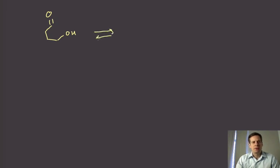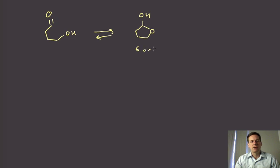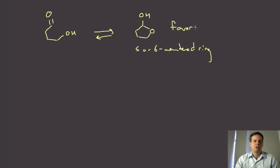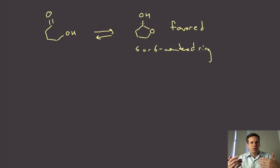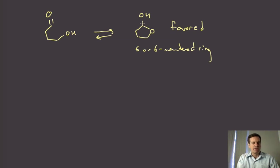In the intramolecular case there is an equilibrium in which on the hemiacetal side we have a cyclic system — a ring. If this is going to form a five- or six-membered ring, it will often favor the closed form. So in these situations it's actually favored to have the ring formed as opposed to the open form. Also, if you have an electron-withdrawing substituent on your carbonyl, that will also favor hemiacetal formation, for the same reason we discussed with hydrates.